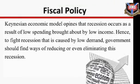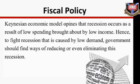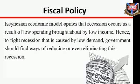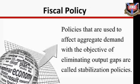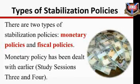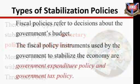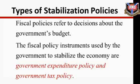Fiscal policy and aggregate demand: the Keynesian economic model states that recession occurs as a result of low spending brought about by low income. Hence, to fight a recession caused by low demand, government should find ways of reducing or eliminating it. Policies used to affect aggregate demand with the objective of eliminating output gaps are called stabilization policies. There are two types: monetary policies and fiscal policies. Monetary policy has been dealt with earlier. Fiscal policies refer to decisions about the government budget — the fiscal policy instruments used by government to stabilize the economy are government expenditure policy and government tax policy.